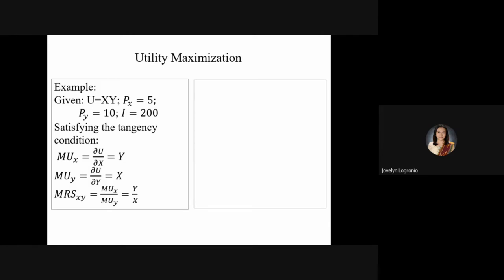Suppose we are given the following utility function: U = X times Y, where the price of X is 5, the price of Y is 10, and the income of the consumer is 200. The question is: what is the quantity of X and Y that maximizes the utility of the consumer?